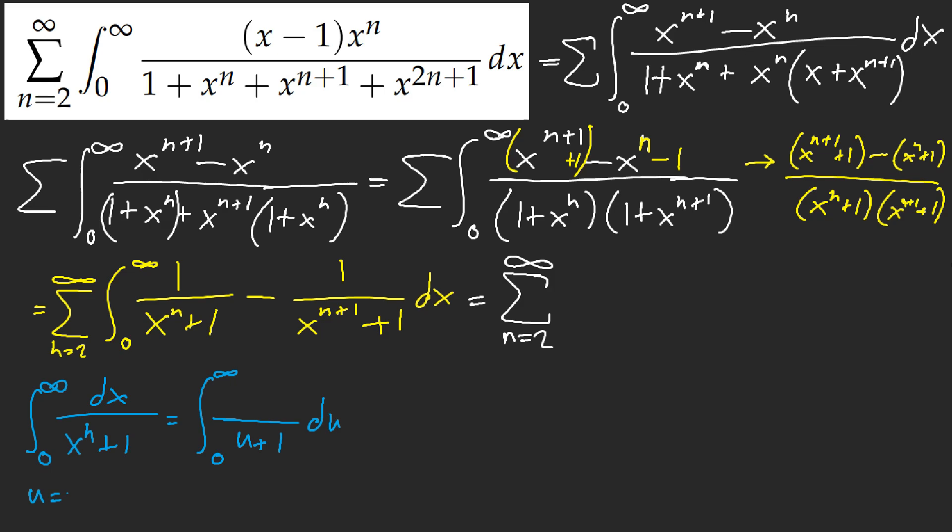x^(n+1). This is what? 0 to infinity of (u + 1) du of what? I'm letting u equal x^n. So I have u^(1/n). So I have (1/n)u^(1/n - 1) du. I think that's it. Yeah. And so now this is equal to 1/n of what? Beta function of 1/n times (1 - 1/n). So I get π/n cosecant(π/n). Ah, got it. All right.